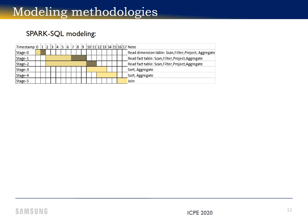The first three stages include scan, filter, and projection, marked by the light dot shades. These are the operations we want to push down to near storage. In this query, the time spent on those operations is 1, 5, and 8 seconds respectively.